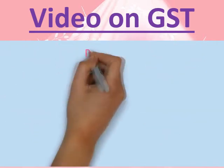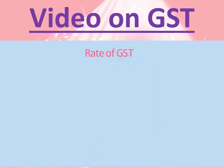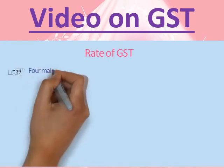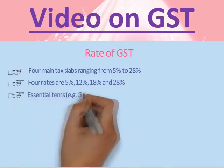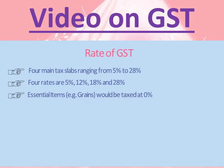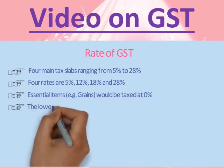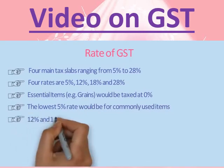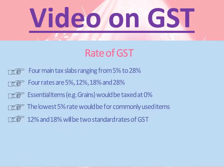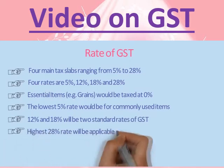Now let's come to the most important part — the rate of GST. The government has announced the rates of the new GST regime. There will be four main tax slabs ranging from 5% to 28%: 5%, 12%, 18%, and 28%. Essential items including food items will be taxed at 0%. The lowest 5% rate is for commonly used items, while 12% and 18% are two standard rates, and the highest 28% is applicable on luxury items.